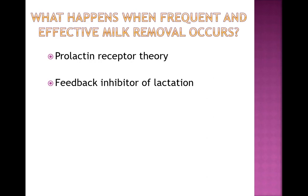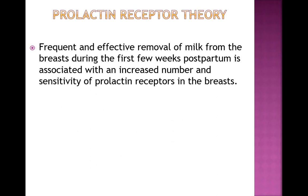To understand why frequent and effective milk removal is so important for building a good milk supply, we need to discuss prolactin receptor theory and feedback inhibitor of lactation (FIL). Prolactin receptor theory holds that frequent and effective removal of milk during the first three weeks is associated with more and more sensitive prolactin receptors. Since prolactin is the hormone that tells the body to make milk, if the mom feeds very frequently in this critical period, her body will make more prolactin receptors, telling the body to make more milk.